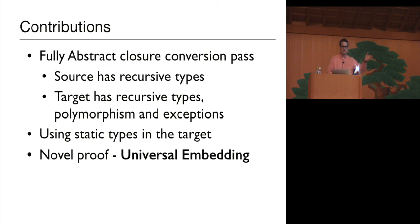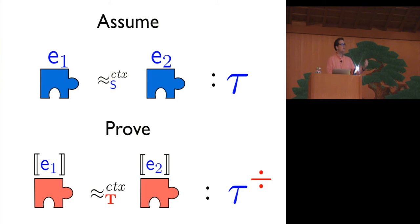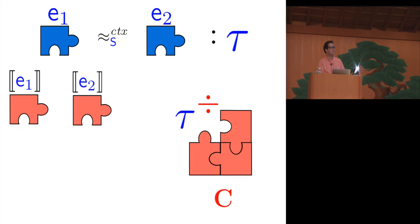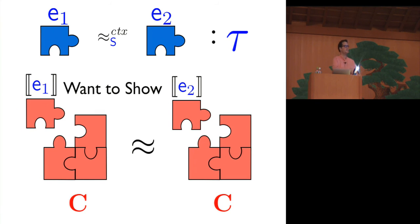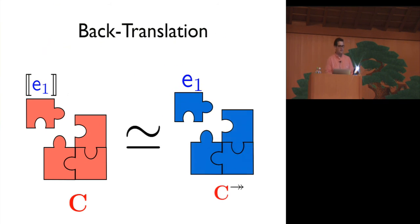To understand the universal embedding, let's first look at how you prove full abstraction and why it's so hard. To prove full abstraction, we're given equivalent source programs and want to show that their compilations are indistinguishable. We're given a well-typed target context C, and we want to show that the compiled programs linking with C have the same behavior — for example, they both diverge or both terminate with equal values. But all we know is that E1 and E2 are indistinguishable to source contexts.